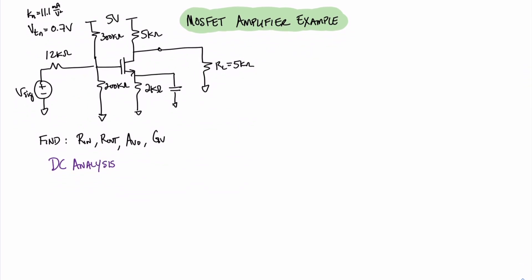Let's look at the fact that we can easily find the voltage at the gate. The voltage at the gate is the voltage division between the 300 kilohm and the 200 kilohm resistors and the 5-volt source. So we can write that the voltage at the gate is 5 volts times 2 divided by 5, which equals 2 volts. The next thing we want to do is find an equation for the voltage at the source given the current through the source resistance. Since the terminal right below that source resistance is grounded, the voltage at the source can be expressed as 2 times ID, where 2 is the kilohm value of the resistor and ID is given in milliamps.